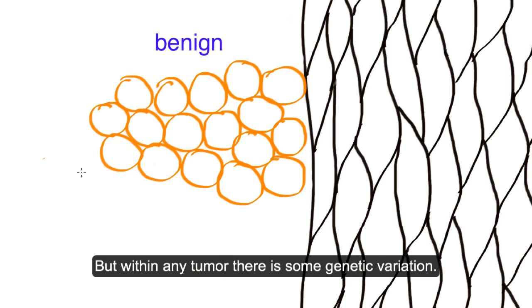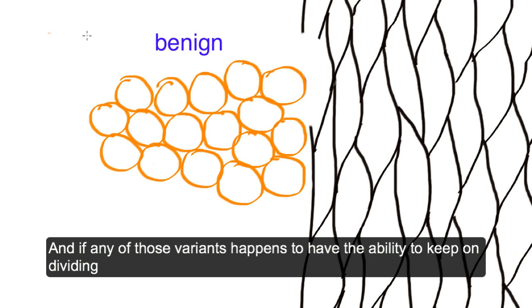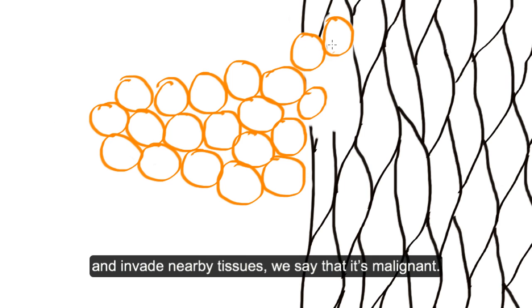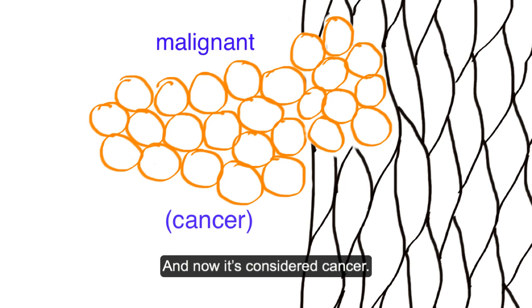But within any tumor, there's some genetic variation. And if any of those variants happens to have the ability to keep on dividing and invade nearby tissues, we say that it's malignant, and now it's considered cancer.